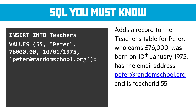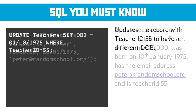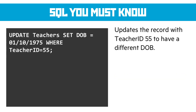Here's how we add data into a table — we use the INSERT command. We say INSERT INTO the teachers table, then the VALUES. In brackets are the values in the order that the fields exist: key field, name, salary, date of birth, and email address — all in the correct order for insertion. Here's how we change data that's already there — we use the UPDATE command. We UPDATE the teachers table, SET the date of birth to a given value WHERE the teacher_id is 55, so it finds teacher 55 and changes their date of birth.